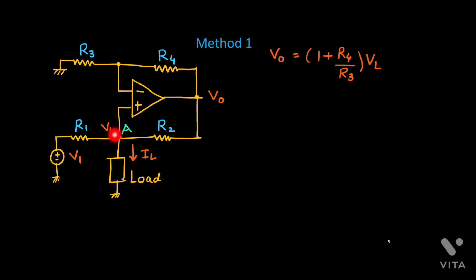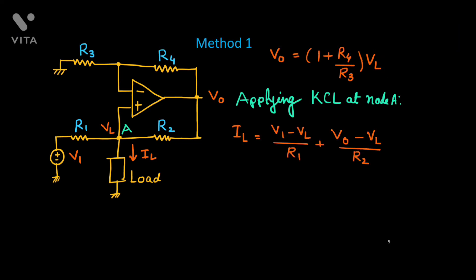We will consider this as node A and we will apply KCL at this node. There is no current entering into the op amp. This branch current is IL and some current is coming from both sides. Here total outgoing current to the load should equal incoming current, that is V1 minus VL upon R1 and this incoming current is V0 minus VL upon R2. So IL equals V1 minus VL upon R1 plus V0 minus VL upon R2. Now we can simplify this by replacing V0.